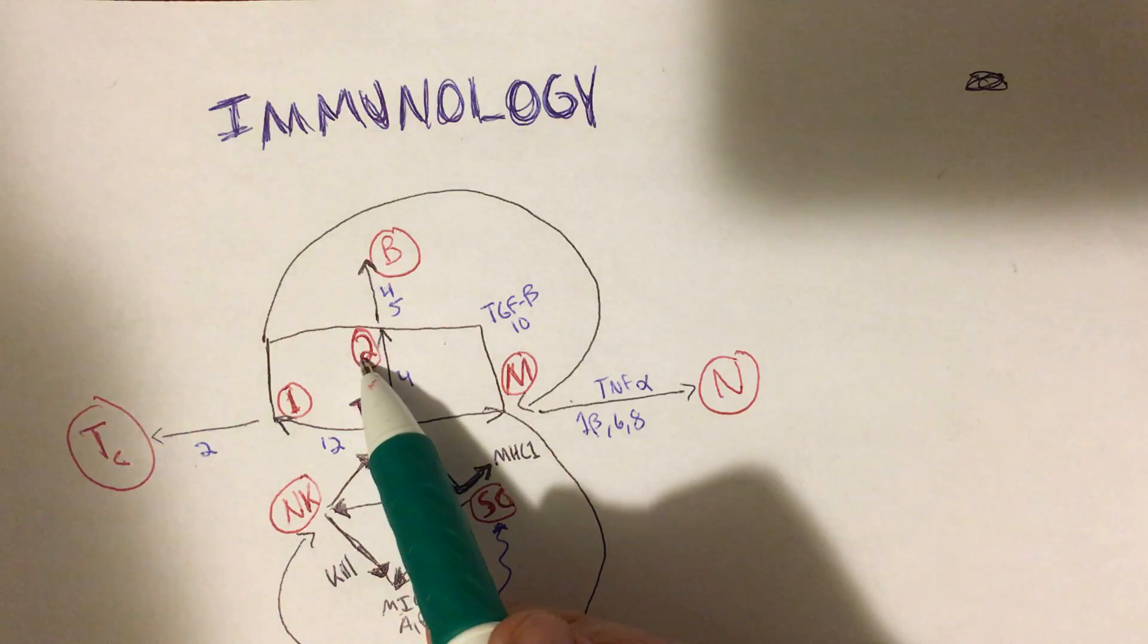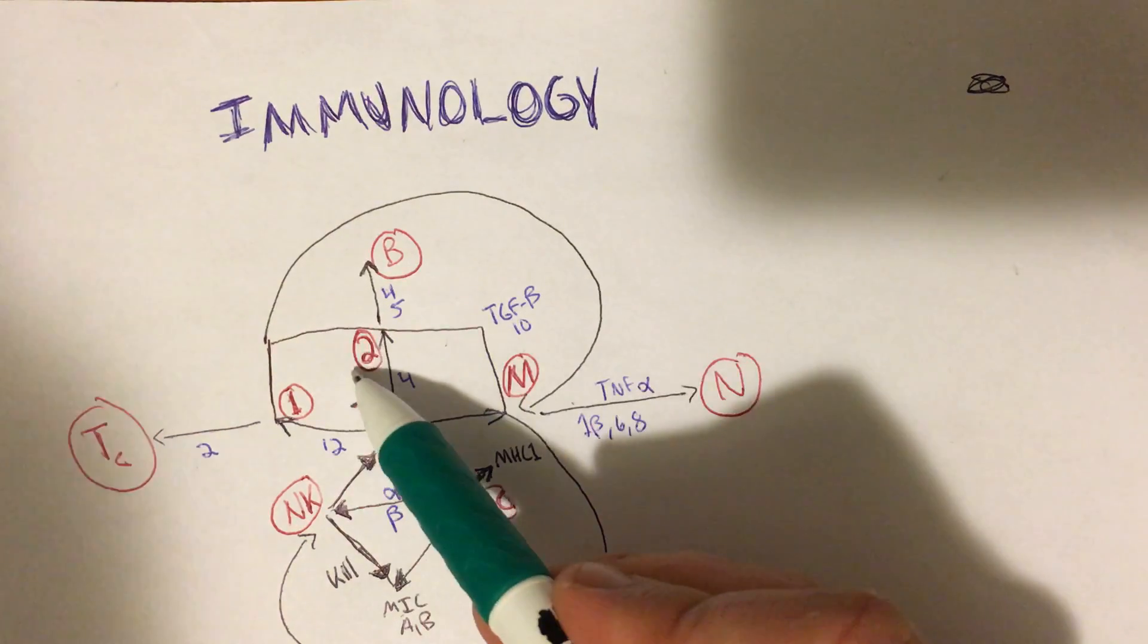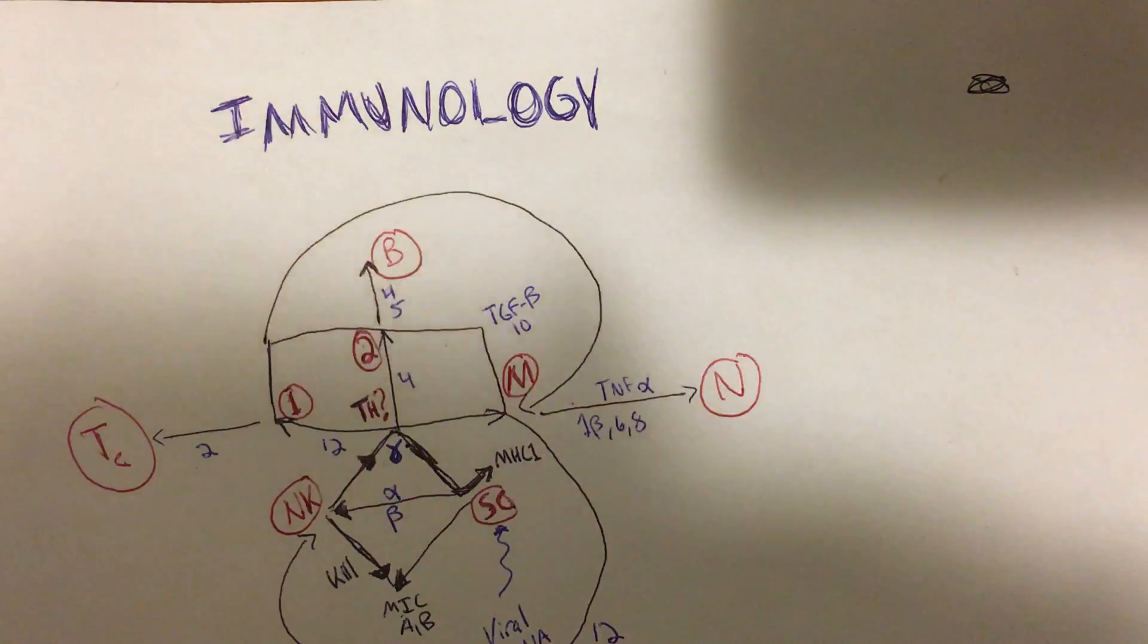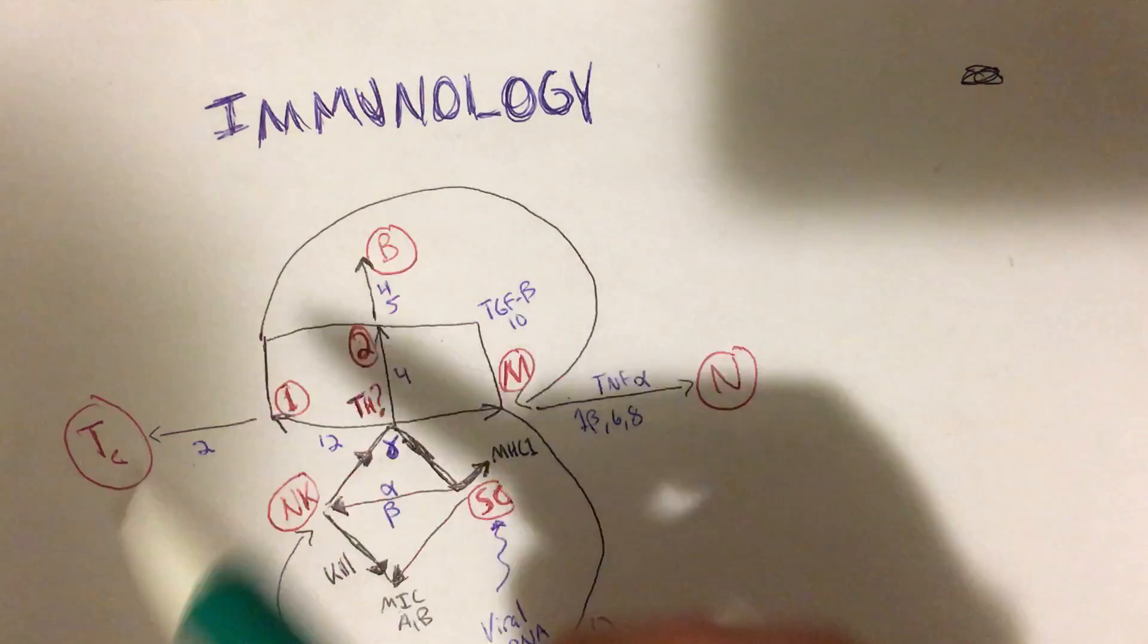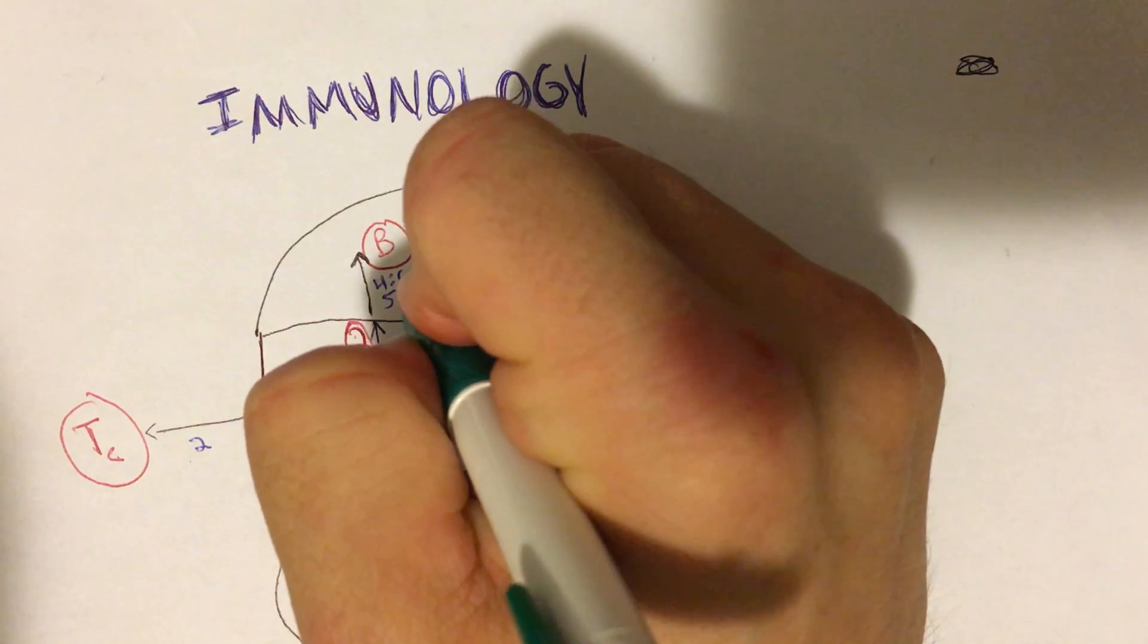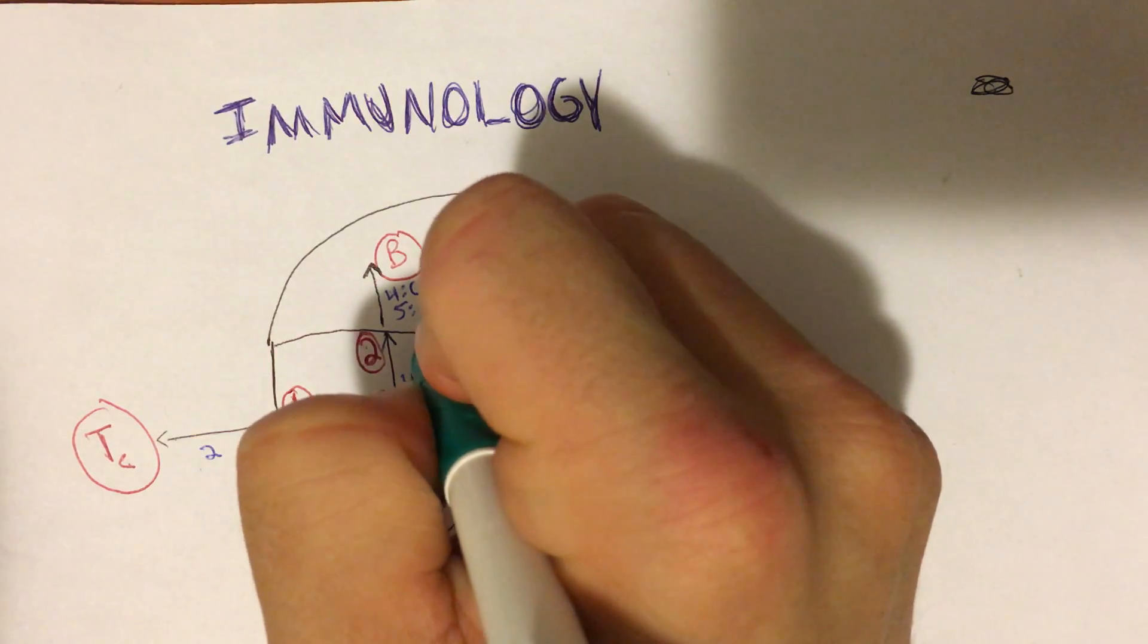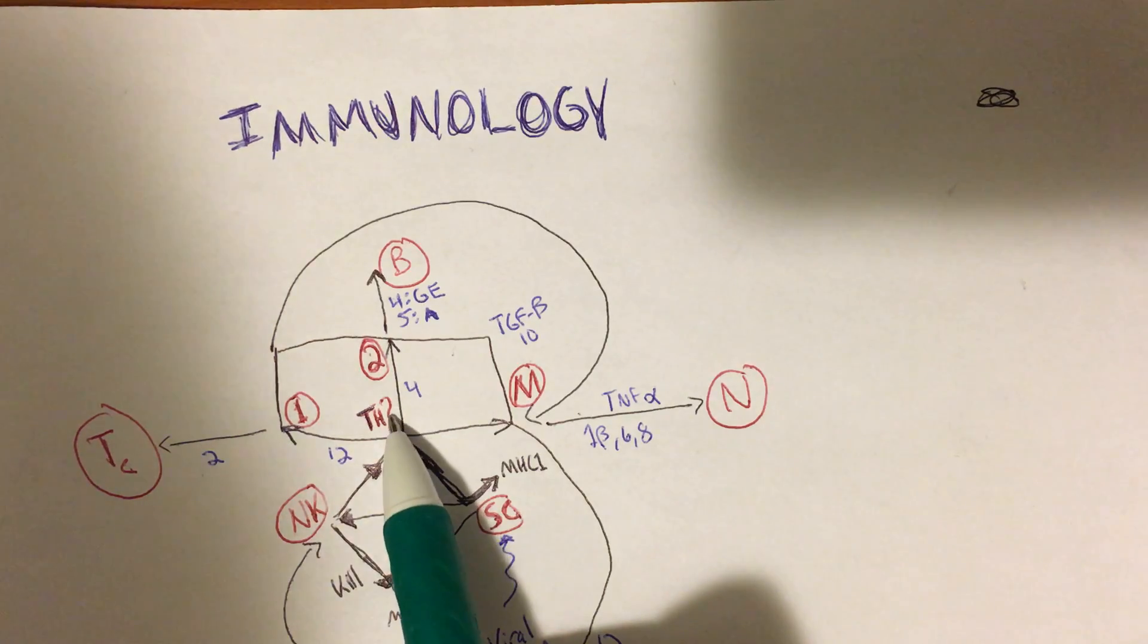So under the influence of 4, the helper T cell becomes subtype 2. Now subtype 2's role - so TH2 cells here, these are CD4 TH2 cells - their job is to upregulate differentiation of B cells, so you'll have your humoral response, and it does so by offloading either IL-4 or IL-5. And it is either or, because here if it's 4, it'll be a B cell that's making either immunoglobulin G or E, and if it's 5, it'll be immunoglobulin A.